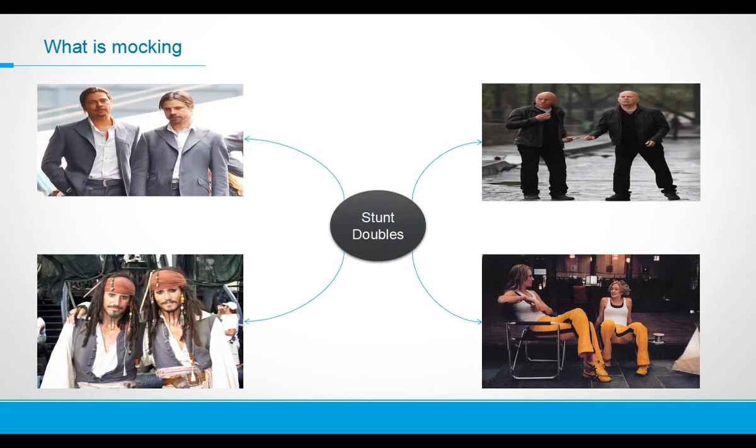Stunt doubles are changed, replaced, used for dangerous action sequences in movies, such as a fighting sequence on top of a burning train, jumping from an airplane, and so on - mainly fighting sequences.